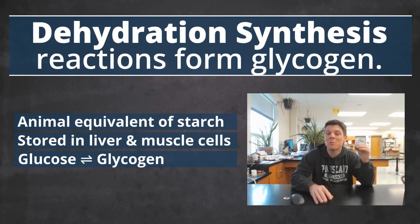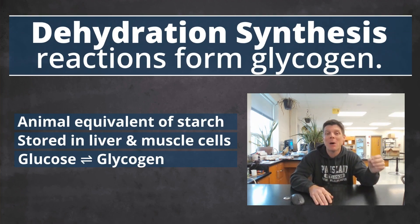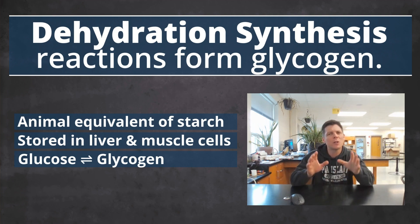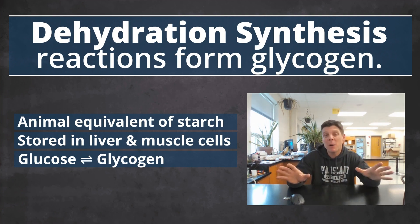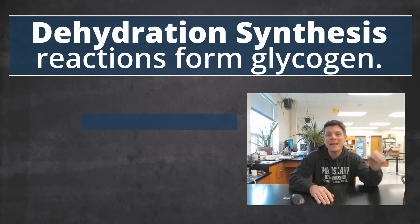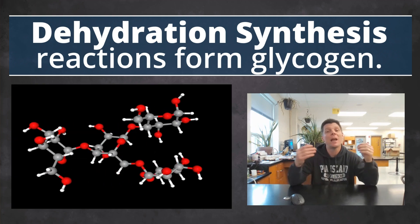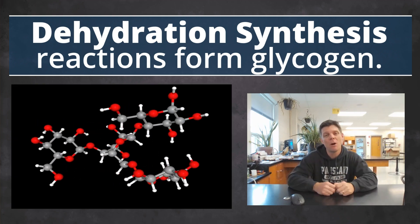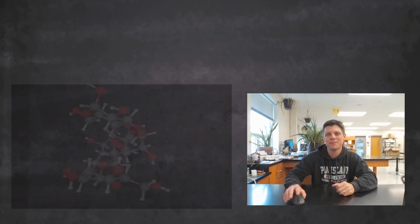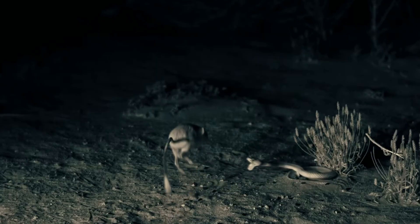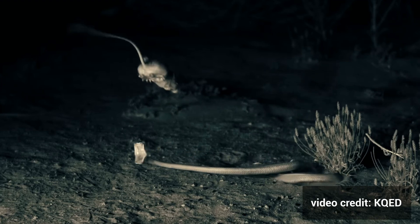When the animal has more simple sugars than they need to power their activity level, the monomers can be used to create glycogen. This branched polysaccharide is formed by dehydration synthesis reactions and is used for long-term energy storage. Later, if food is scarce, the animal's metabolic activity will break down the stored glycogen using hydrolysis reactions to form glucose, which can provide the energy needed for survival.